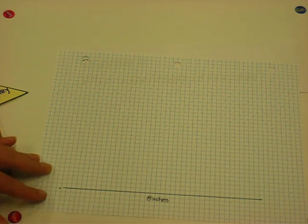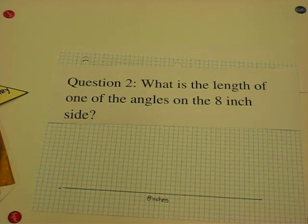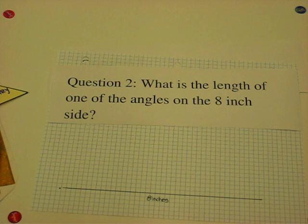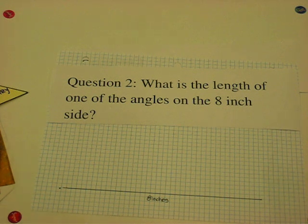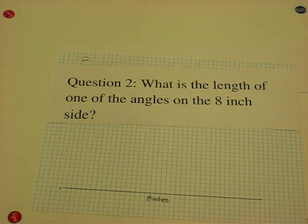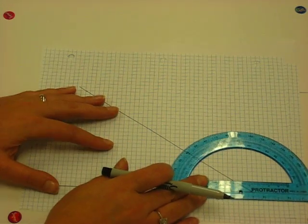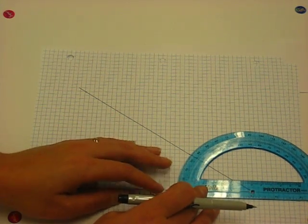Second question. What is the length of one of the angles on the eight inch side? The measurement of one of the angles on the eight inch side is 34 degrees. Okay. Thirty-four degrees. I'm getting close.